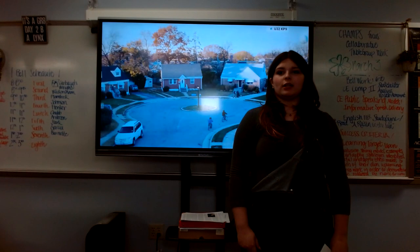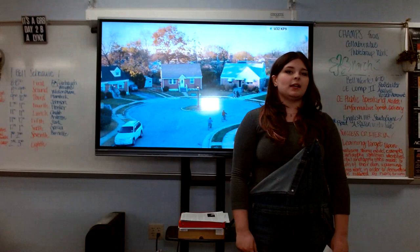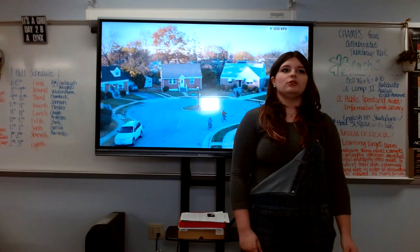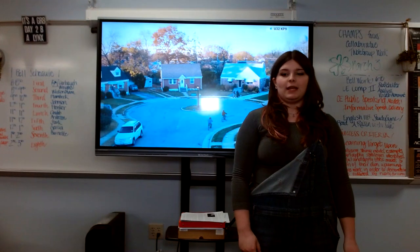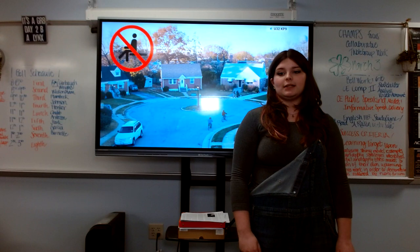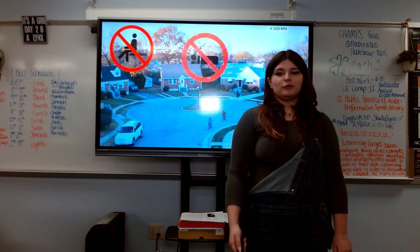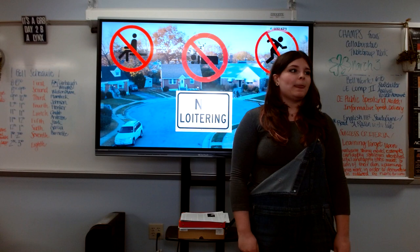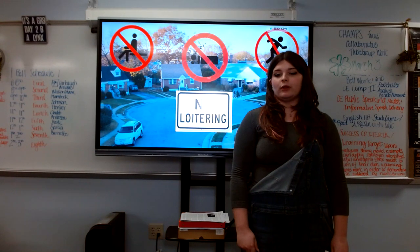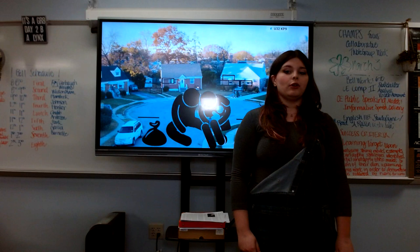Anti-homeless architecture, or hostile architecture, is a style of design used in public resting spaces that is specifically designed to discourage certain behaviors. This can include sitting, sleeping, skateboarding, or loitering. However, this can also be done to discourage certain groups of people from using a certain space — this includes the homeless.